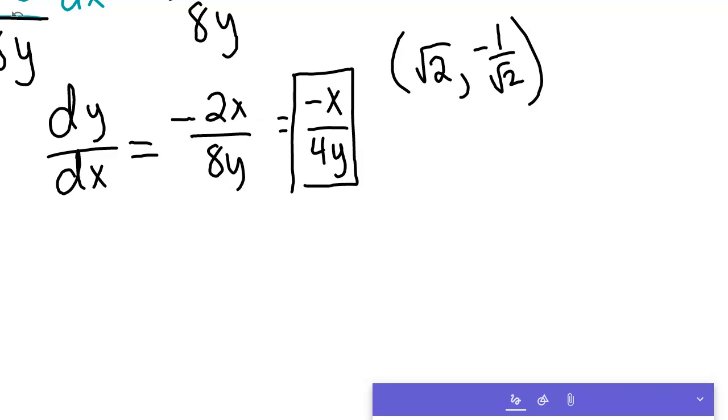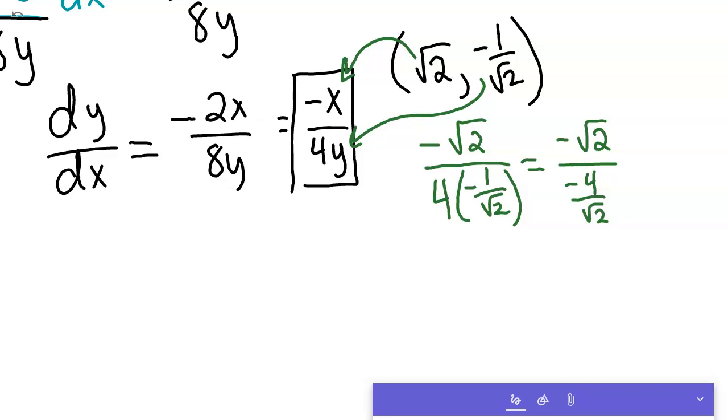And our point is the root of 2 comma negative 1 divided by the root of 2. And so, let's plug that thing in. So, if you plug that in, your x is the root of 2. So, you'd have negative root 2. So, I'm just putting this right here. And I'm putting this negative 1 over root 2 in place of the y. So, it would be 4 times negative 1 over the root of 2. And we'll do some multiplication with that. So, it would be negative root 2 over negative 4 over root 2.